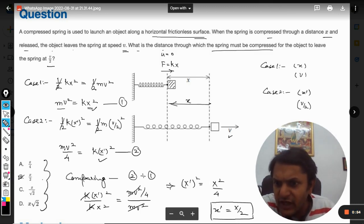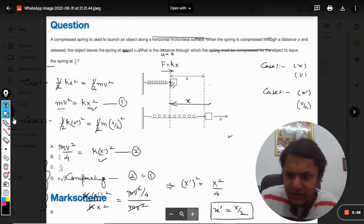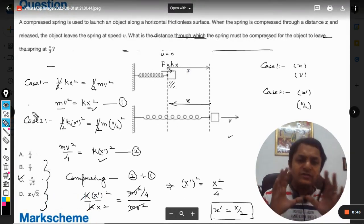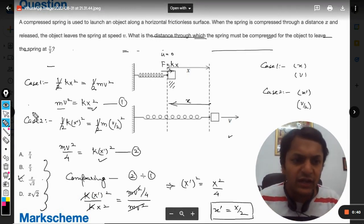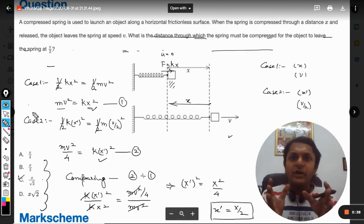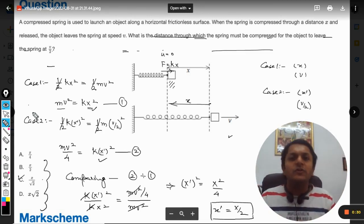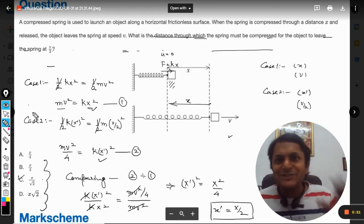So our answer should be B. Let me verify the answer—yes, the answer is B. This is how we do this question. This is a very important question, and I will say in the chapter of work, energy, and power this becomes one of the most important questions that you can ever try. Please don't ignore this question, try to do it twice or thrice. Even then, if you face any problem, please mention that in the comment section. All the best, bye.